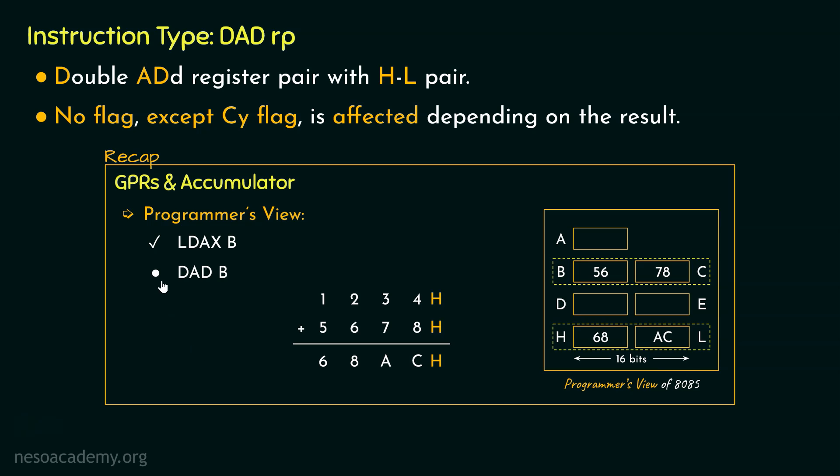So for instructions like double add, the HL register pair works similarly like the accumulator. If you remember, whenever we have performed any operation and if one of the operands is within the accumulator register, after the operation has been performed, the result is supposed to be loaded within the accumulator register itself. Something like that is also happening in this particular case.